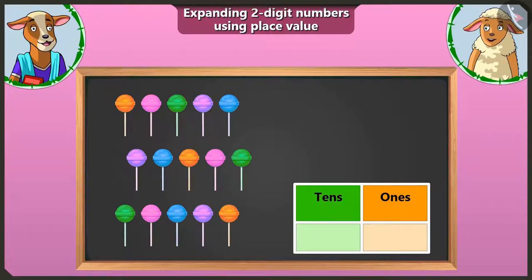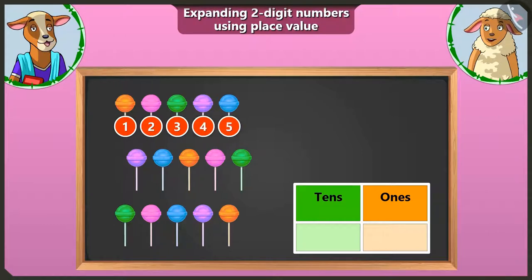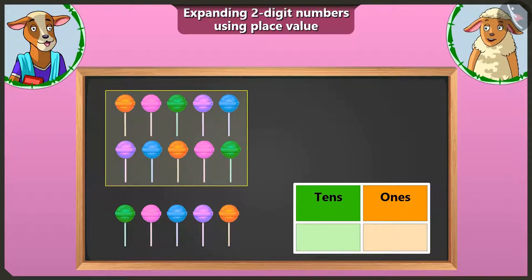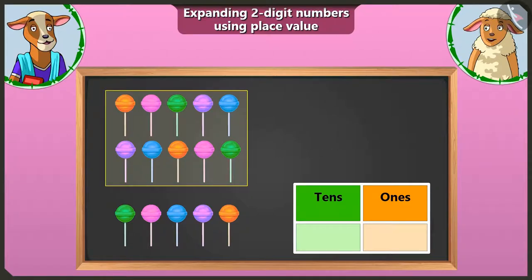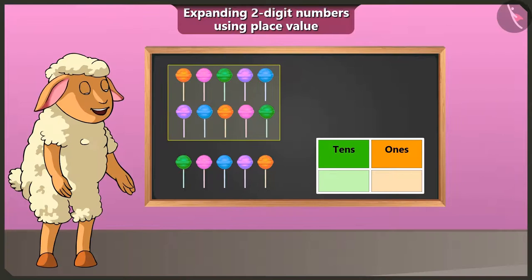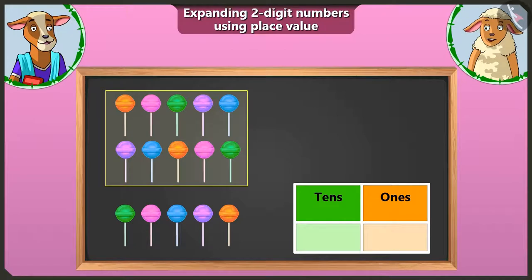Look, here is a lollipop. Let us make a bundle of ten of these and write the number. One, two, three, four, five, six, seven, eight, nine and ten. And let us make a group like this. This is a group of ten lollipops. How many groups of tens do we have? We have one group of ten lollipops. That is why we will write one in the box of tens.